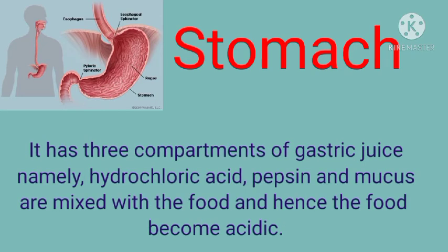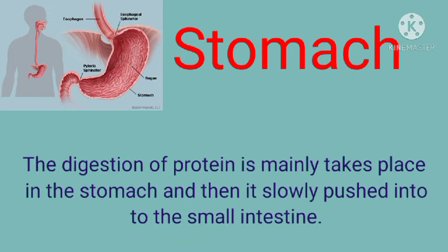The stomach has three components of gastric juice: hydrochloric acid, pepsin, and mucus. When food is turned into a fine mixture, these gastric juices mix with the food, making it acidic, which destroys microorganisms in the food. Digestion of proteins mainly takes place in the stomach. After that, a small amount of food is pushed into the small intestine for further digestion.